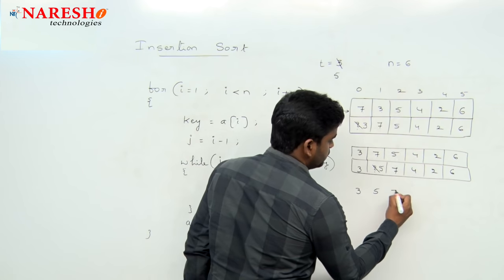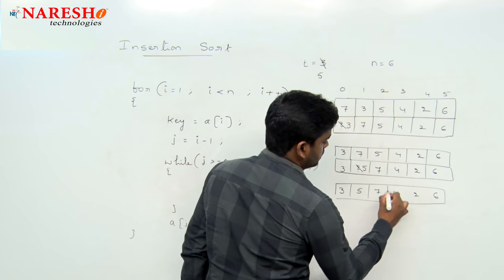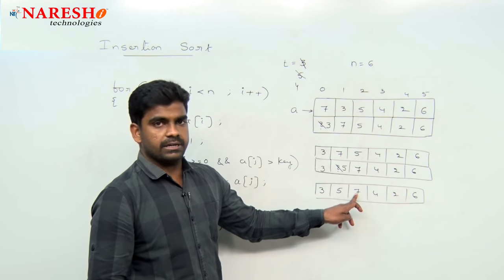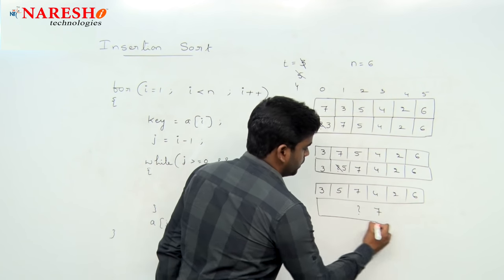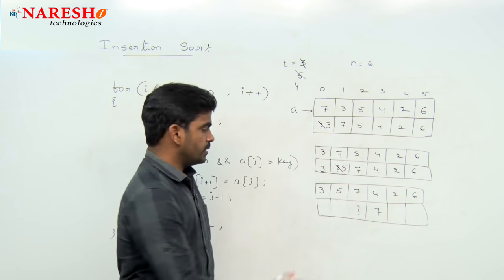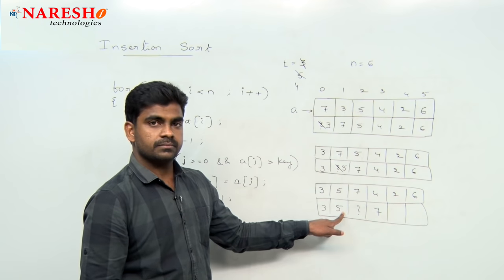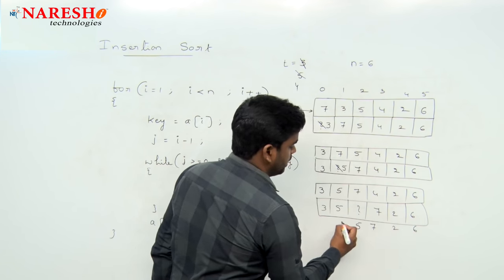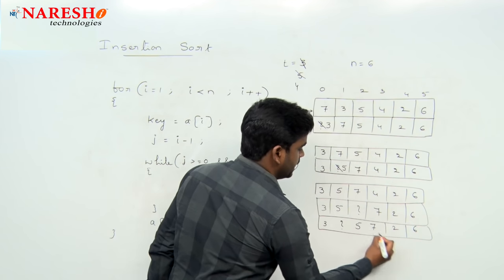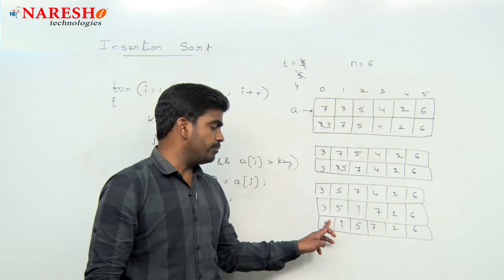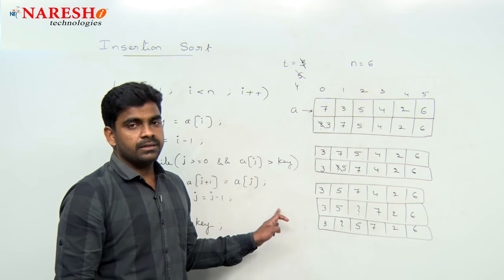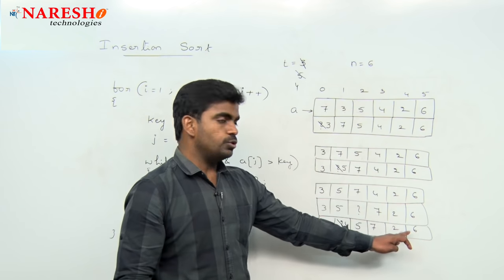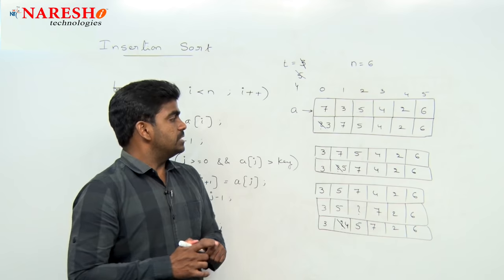In the next iteration, the array is 3, 5, 7, 4, 2, 6. Now the temp value is 4. That 4 is compared with 7 — it is the highest value, so 7 shifts right. Next, comparing with 5 — we find another higher element, so 5 shifts right. Again comparing with the previous element, whenever we find a lesser element or reach index 0, we stop. So the value becomes 4 and is placed. Similarly, 2 and 6 will also be adjusted. This is how the algorithm works.